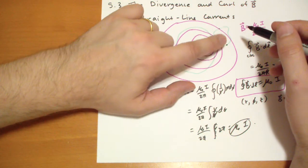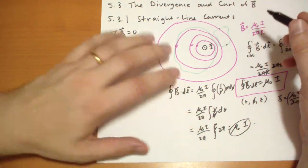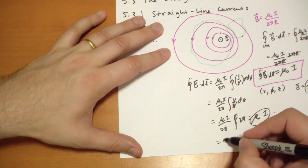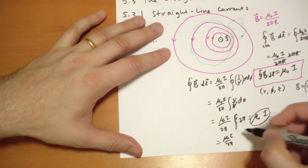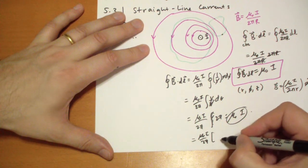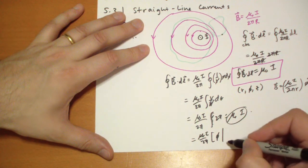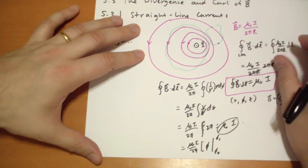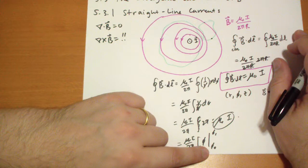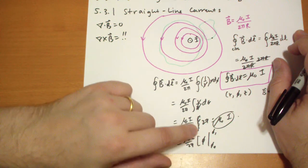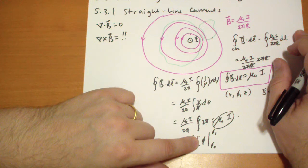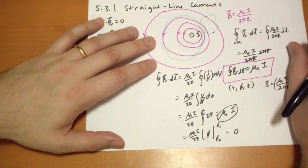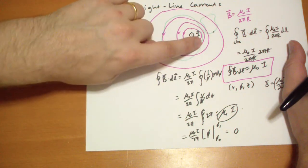Over here, you start at this point, you go up to this point, and you go back down to that point. So your φ's range from some value to some value, and then back to the original value. So your integral is going to be equal to μ₀I over 2π of φ evaluated between the original φ and the other φ. And if you start and end at the same φ, what's that going to be? φ minus φ. Equals zero.